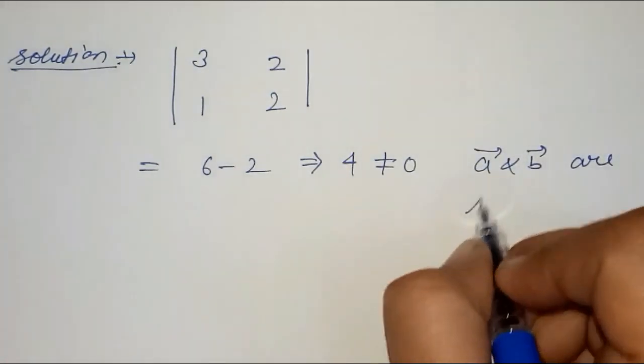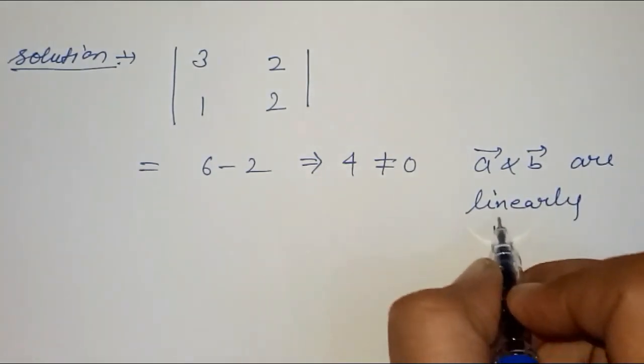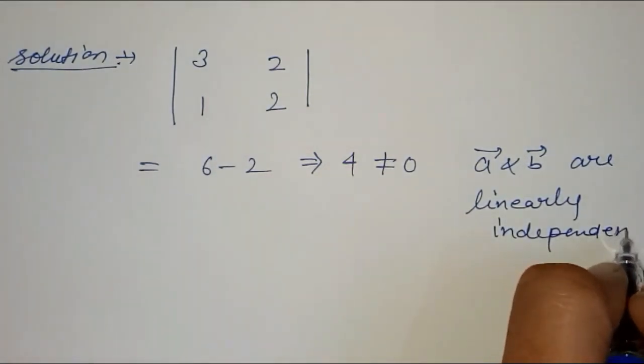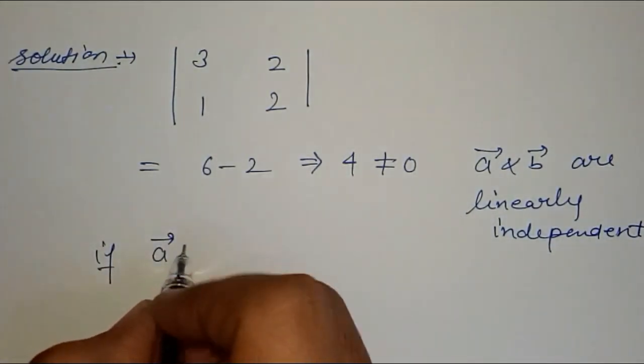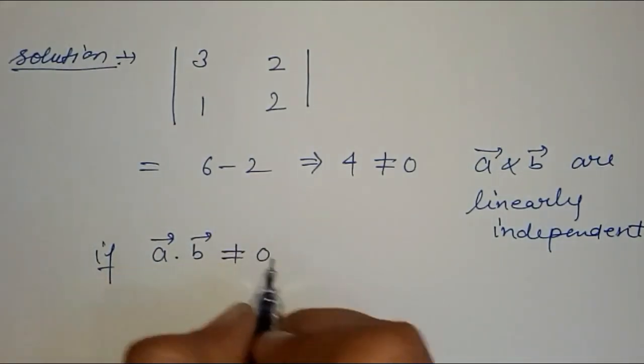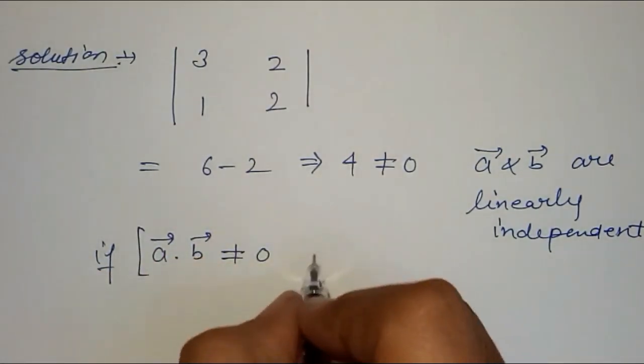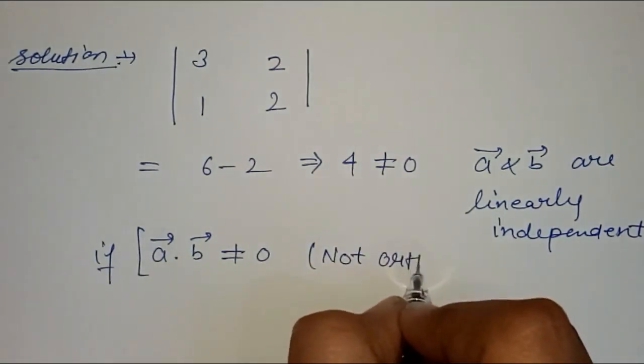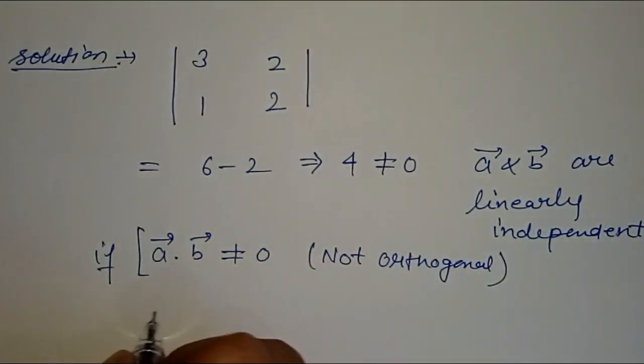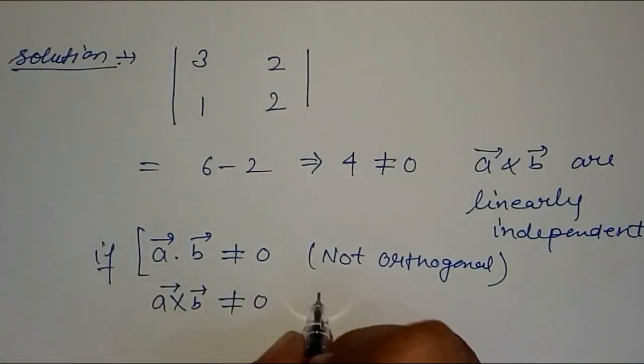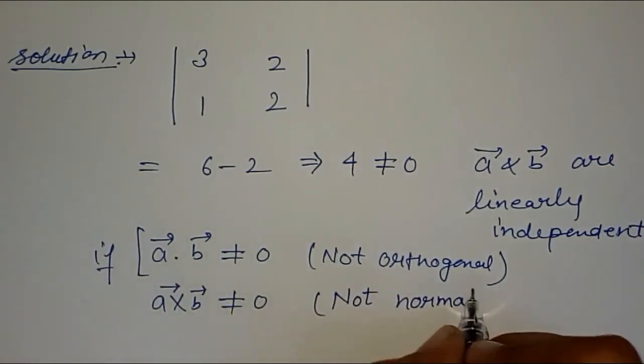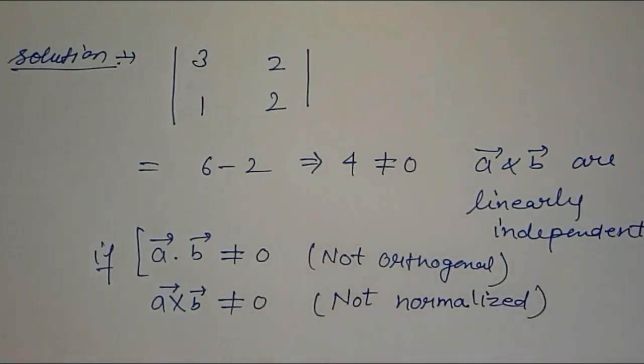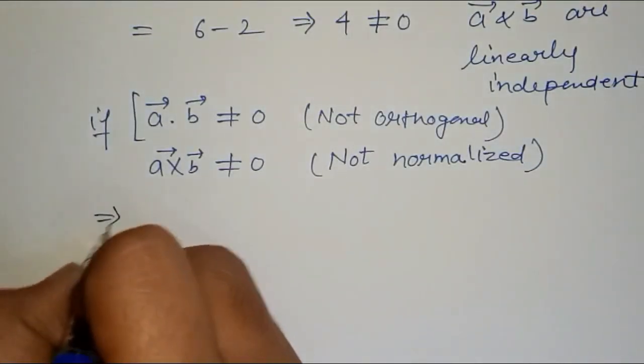If we take the dot product, it is not equal to zero, so it is not orthogonal. If we take the cross product, it's again not equal to zero and it's not normalized. Our answer is A.